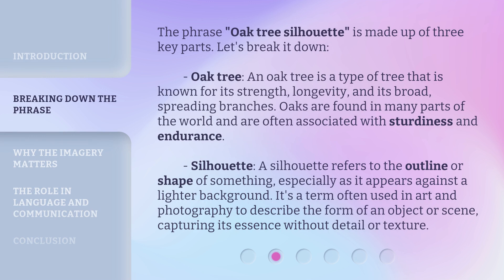The phrase Oak Tree Silhouette is made up of three key parts. Let's break it down. Oak Tree: an oak tree is a type of tree known for its strength, longevity, and its broad, spreading branches. Oaks are found in many parts of the world and are often associated with sturdiness and endurance.